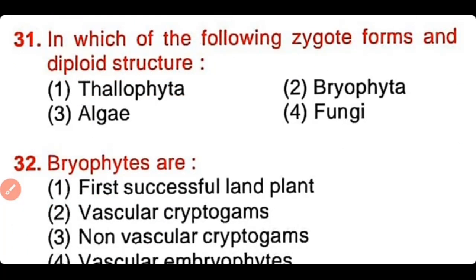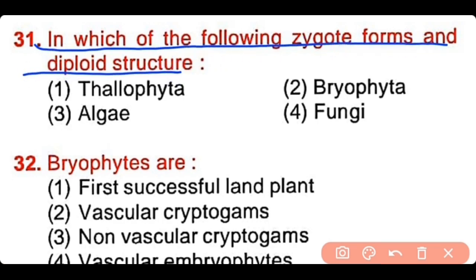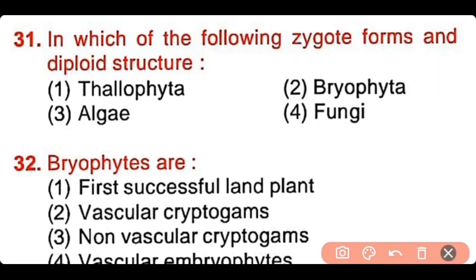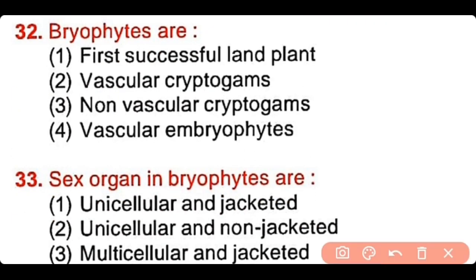Question number 31: In which of the following does the zygote form the diploid structure? Thallophyta, Bryophyta, Algae, or Fungi. The correct answer is option 2. In bryophytes, the zygote forms a multicellular embryo that is later developed into sporangium. Inside the sporangium, diploid spore mother cells are formed, representing the last stage of the sporophytic generation. Question number 32: Bryophytes are the first successful land plants, vascular cryptogams, non-vascular cryptogams, or vascular embryophytes. The correct answer is option 3 — bryophytes are non-vascular cryptogams because they have no vascular tissue.